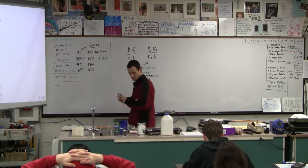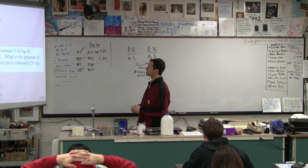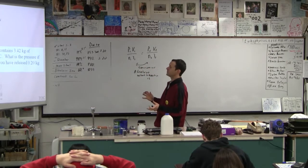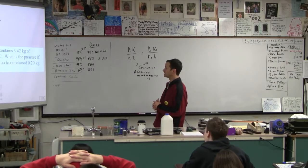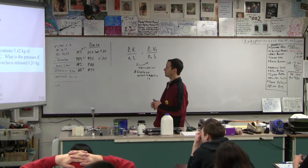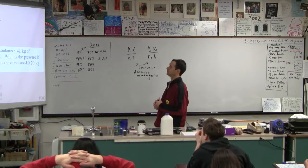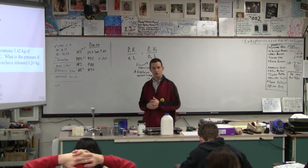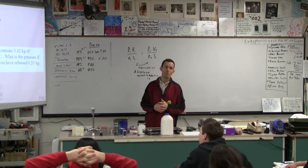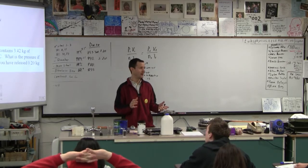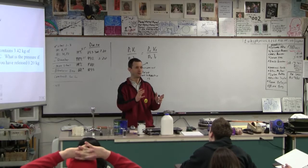Let's try some examples. A nitrogen cylinder contains 3.42 kilograms of nitrogen — assuming that's the increase in mass of the cylinder — at 2,000 psi and 20 degrees Celsius. What is the pressure if the temperature is 150 degrees Celsius but you've released 0.20 kilograms of nitrogen? Is 2,000 psi absolute pressure? Probably. Just be careful — chances are if you're working in a lab and you look at the pressure gauge, it's giving you gauge pressure.